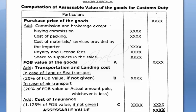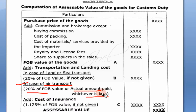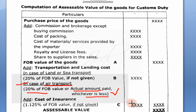For air transport, there is a special adjustment to remember: transportation charges are taken as 20% of FOB or the actual amount paid, whichever is less. If the amount is given, we write that. If it is not given, we calculate 20% of FOB. For air transport specifically, both figures — 20% of FOB and the actual amount paid — are compared and the lower one is considered as the transportation expense.